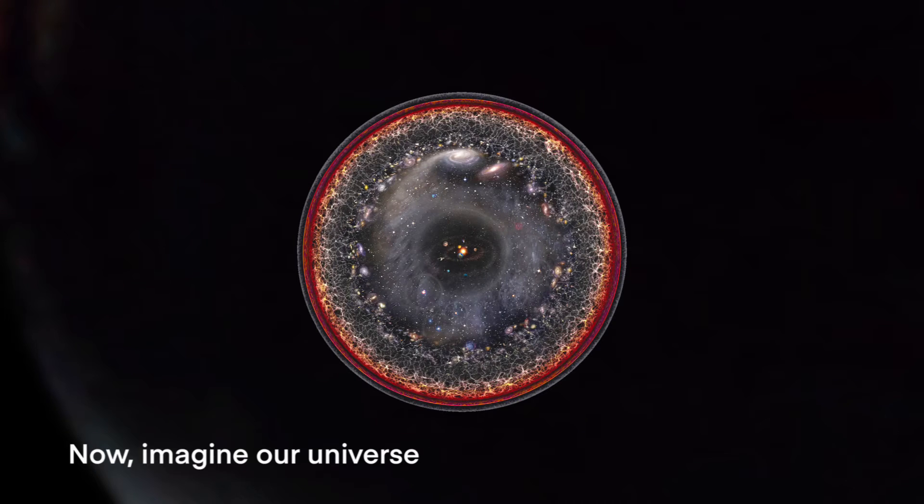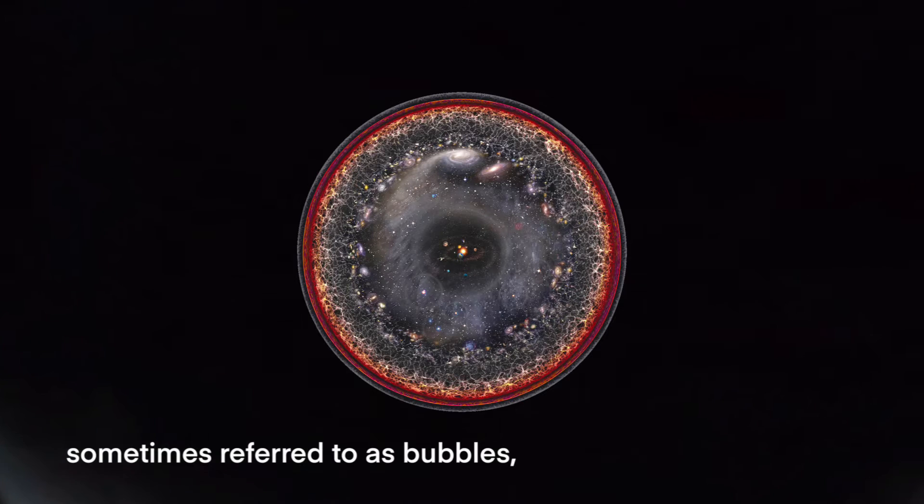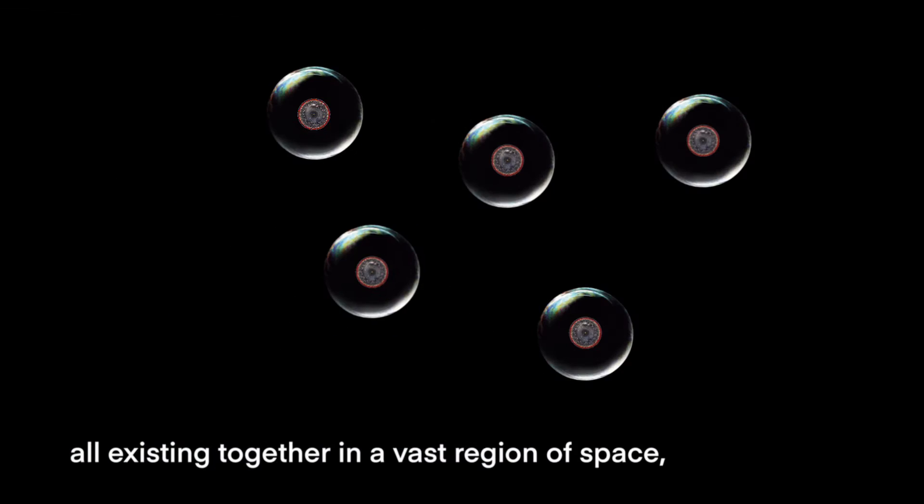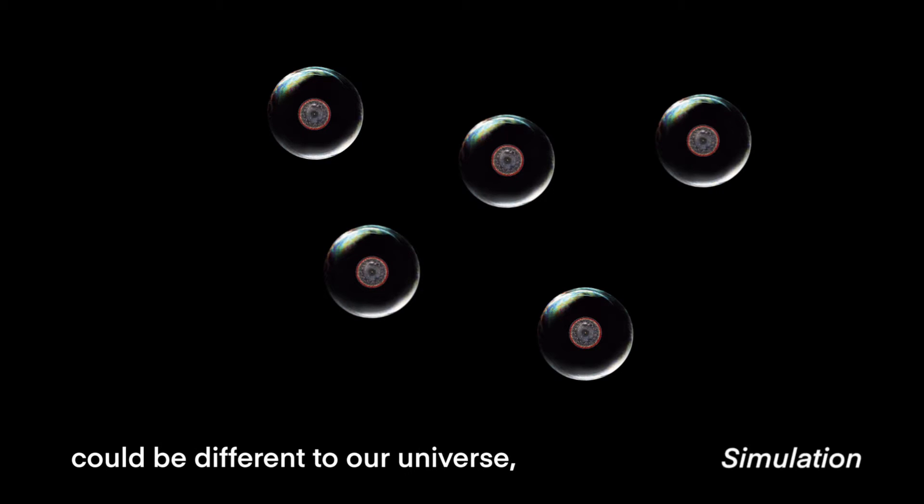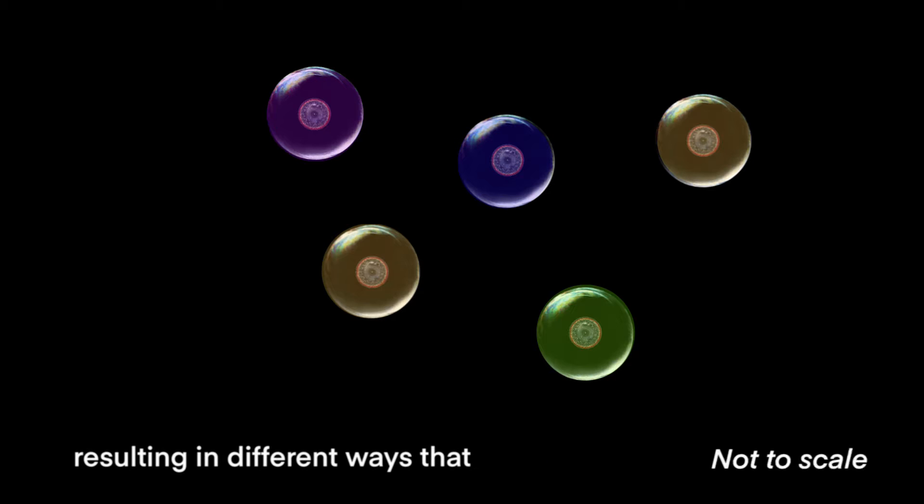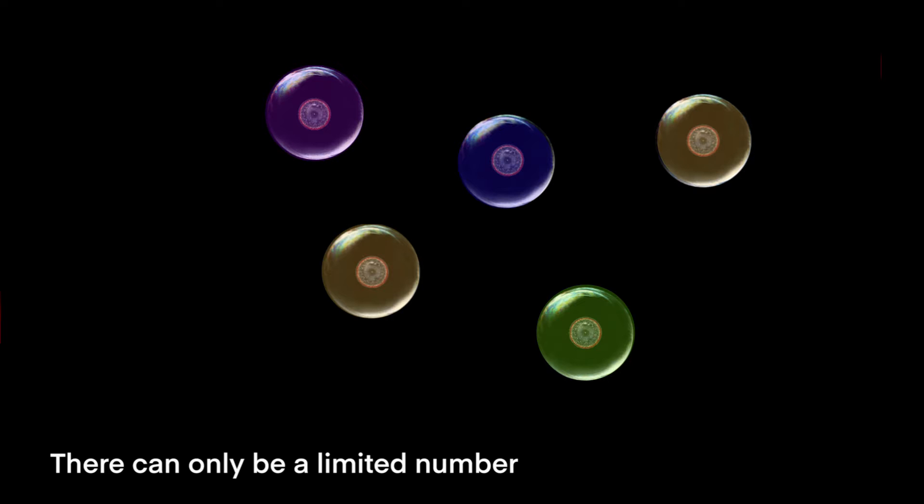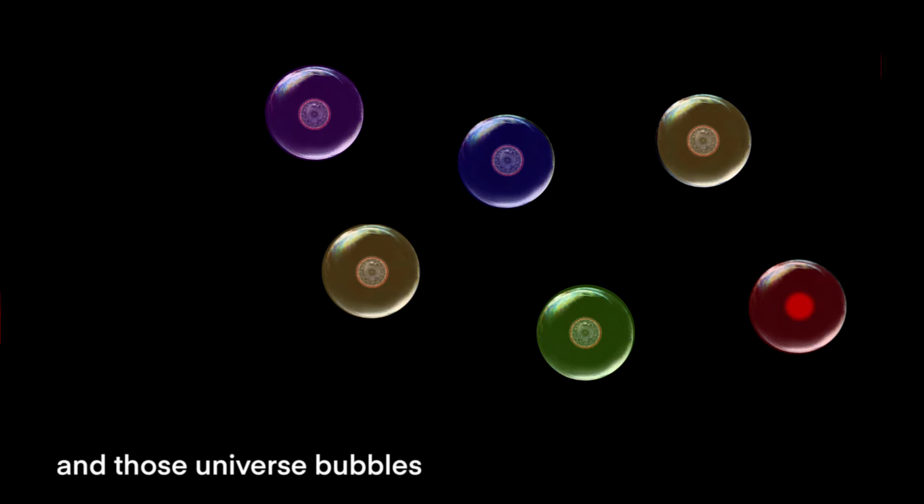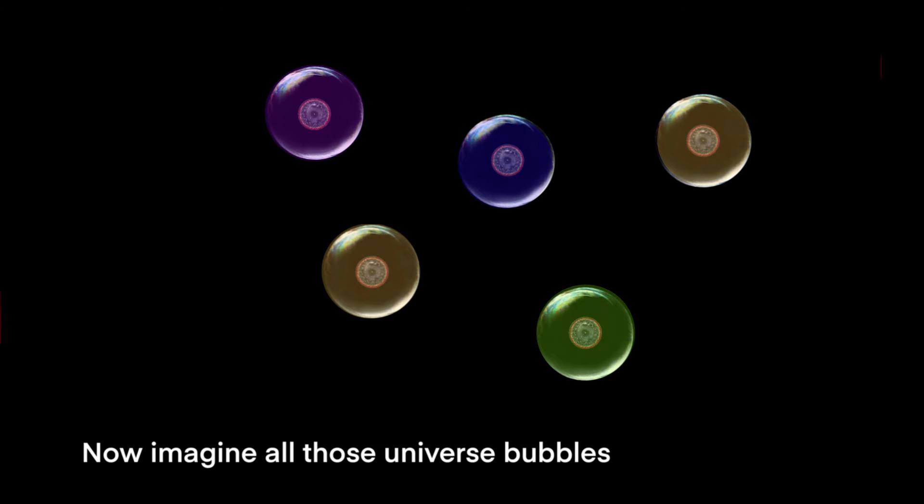Now imagine our universe being one of many other universes, sometimes referred to as bubbles, all existing together in a vast region of space often referred to as the multiverse. Those other universe bubbles could be different to our universe because the physical laws of nature could be slightly different, resulting in different ways that matter in each universe behaves. There can only be a limited number of variations in the physical laws that can sustain a viable universe. Laws that go beyond those limits can't support a viable universe, and those universe bubbles cannot exist in the multiverse and immediately burst.